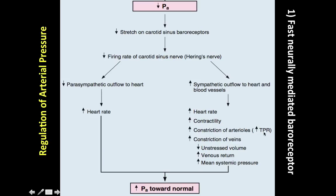Vasoconstriction of the arterioles leads to increased total peripheral resistance. When blood pressure is low, this vasoconstriction results from increased sympathetic outflow and increases resistance in the body. When you vasoconstrict and resistance increases, you increase flow to the heart, thereby increasing cardiac output and blood pressure.